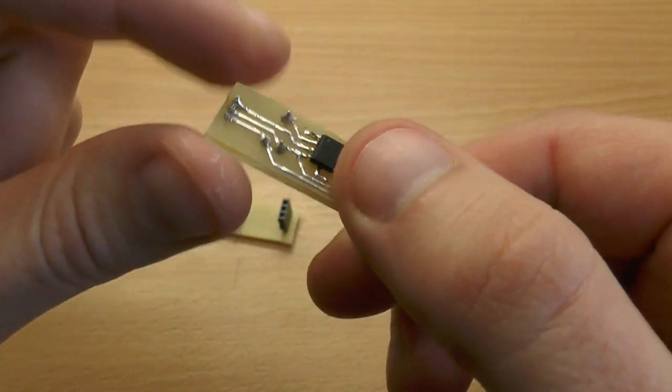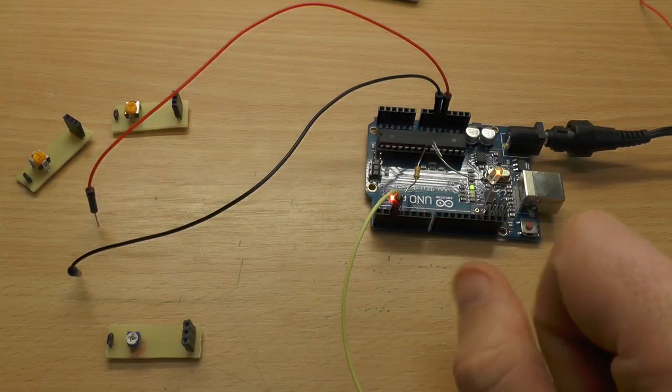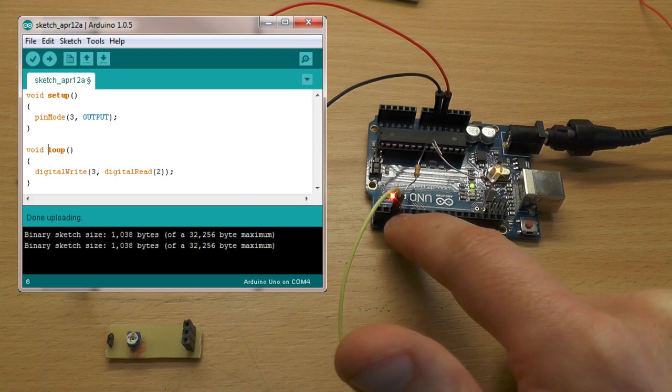This is it, so let's just test it. I have written a simple sketch for this Arduino that's just reading from digital pin 2 and writing the result to digital pin 3.